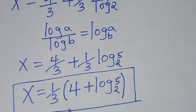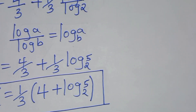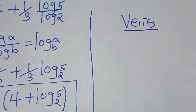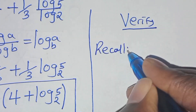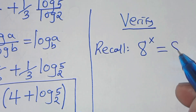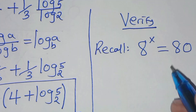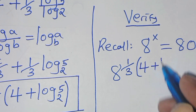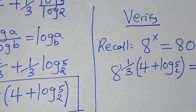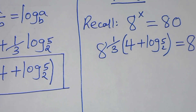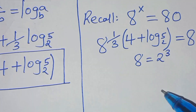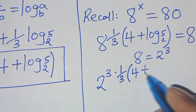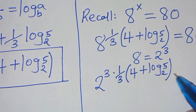Let's verify that this value of x actually satisfies the equation. We have 8 to the power x, and this should give us a value of 80. Substituting the value of x, we will have 8 raised to the power of one-third times the bracket 4 plus log 5 to base 2. We can express 8 as 2 to the power 3, so this becomes 2 to the power 3 times one-third times (4 plus log 5 to base 2), and this should give us a value of 80.